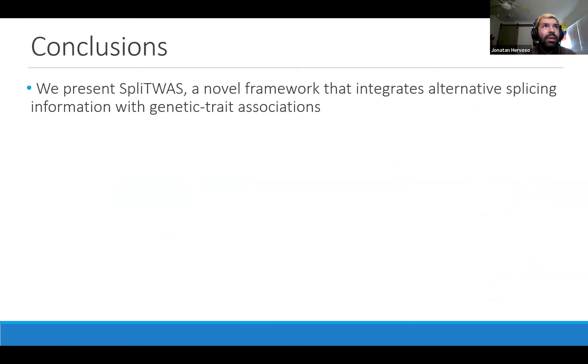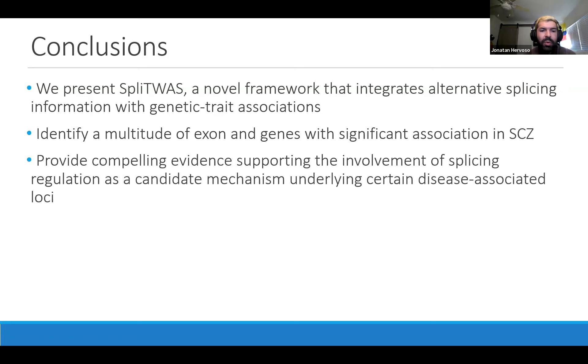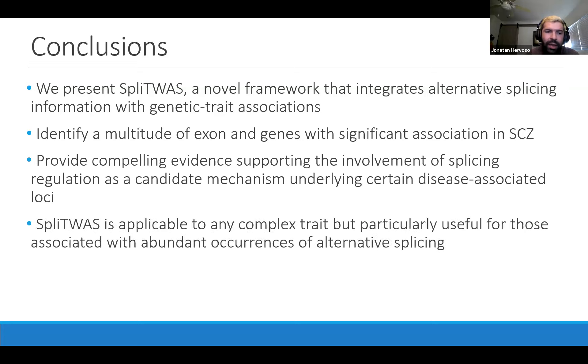To conclude, we presented here SPLITWAS, which is a novel framework that integrates alternative splicing and genetic trait associations, bridging the gap between RNA biology and genetics. We've identified a multitude of exons and genes with significant associations in schizophrenia. We've provided compelling evidence of the involvement of splicing regulation as a candidate mechanism for underlying certain disease-associated loci. SPLITWAS, even though I only showed it applied to schizophrenia, is applicable to any complex trait, but it's particularly useful for those associated with abundant occurrences of alternative splicing.